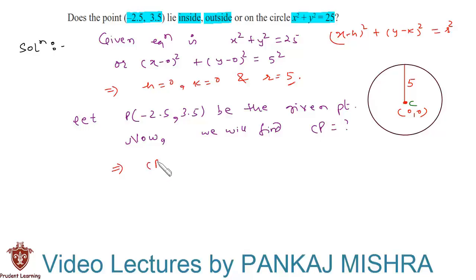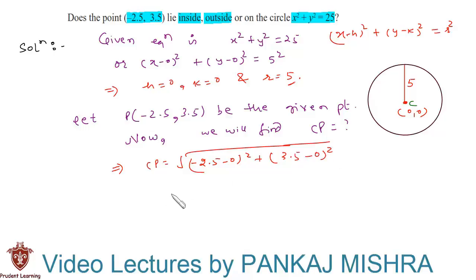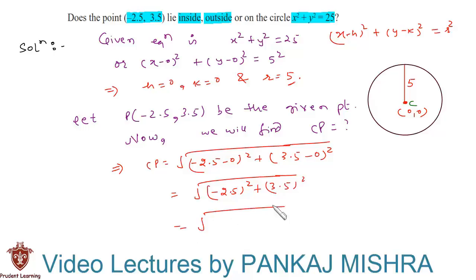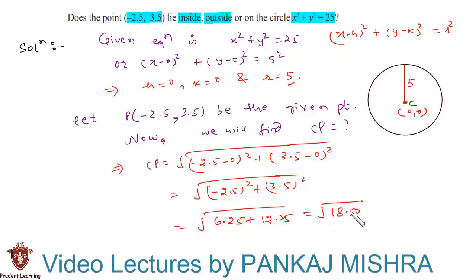Using the distance formula, CP = √[(-2.5 - 0)² + (3.5 - 0)²] = √[(-2.5)² + (3.5)²] = √[6.25 + 12.25] = √18.50.